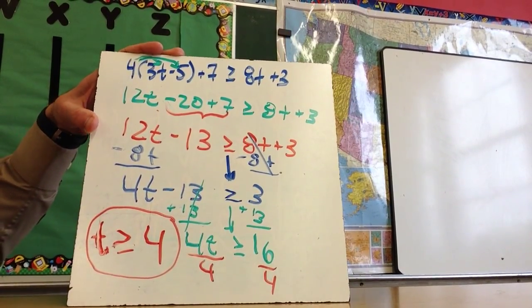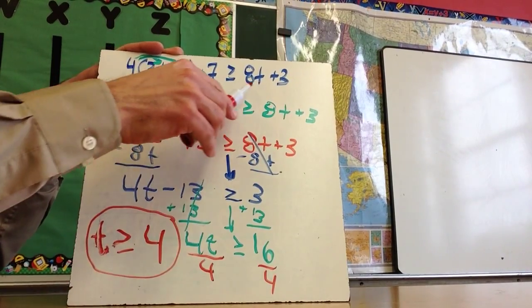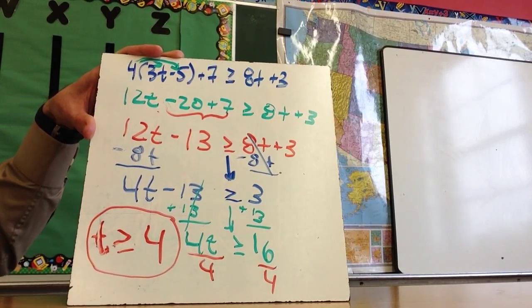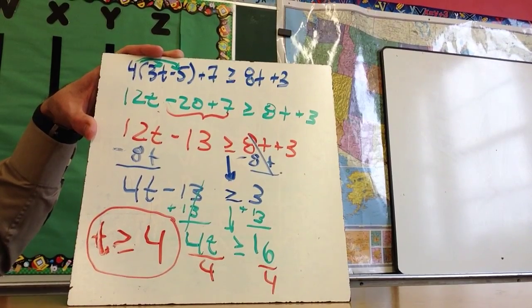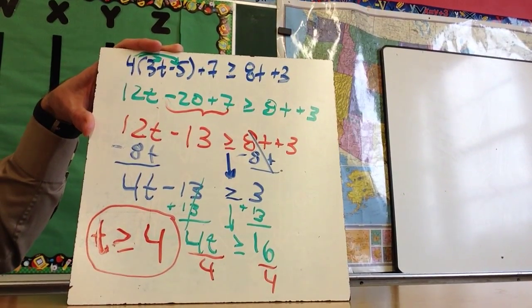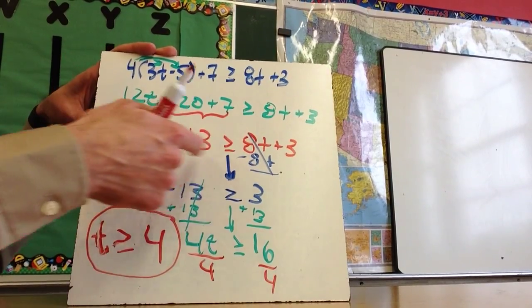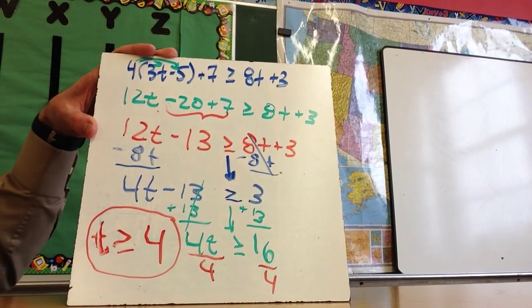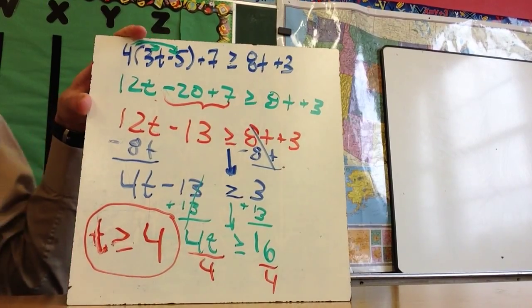If I wanted to check my answer, I'm taking a number that is greater than 4, so say like a number like 10, and I can substitute 10 in to both places up here and make sure that this actually works. But what I want you to notice on this particular problem, the way we solved it, I did not flip the sign. The sign never actually changed. There would be ways that you could. For instance, if you subtracted 12t from both sides and then ended up subtracting 3, you would actually have to flip the sign. But you should get the same answer, flipping it or not.